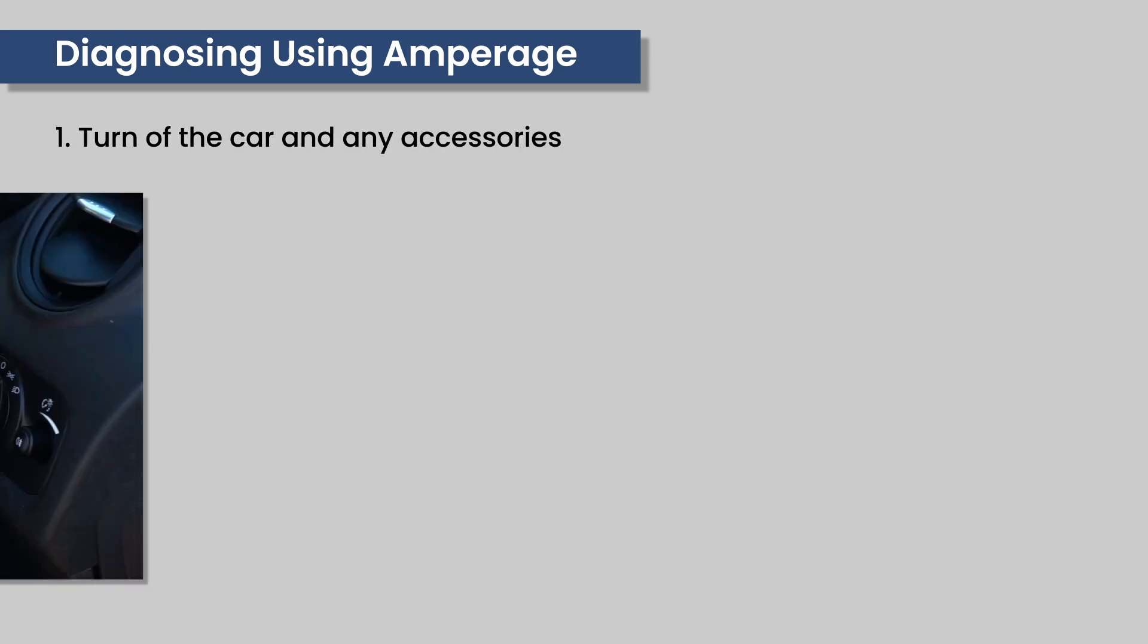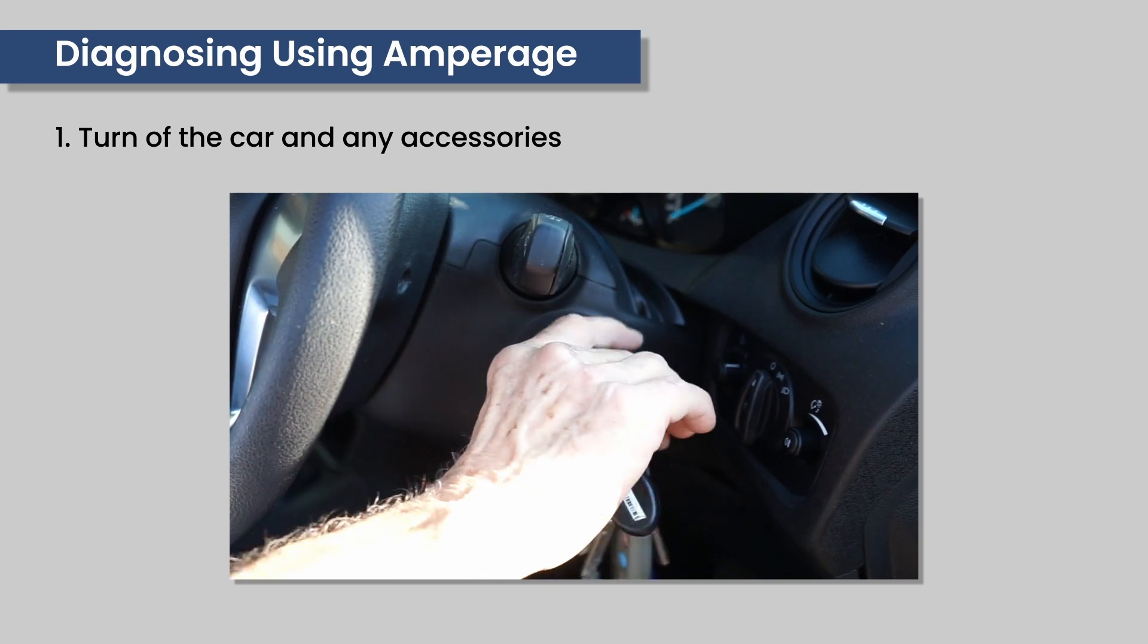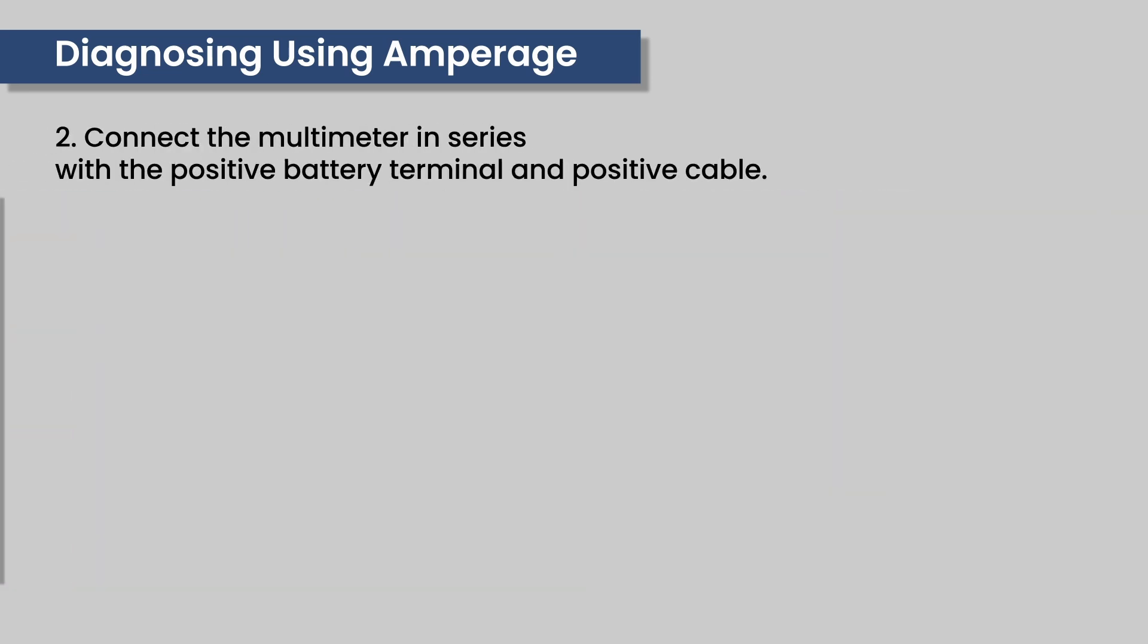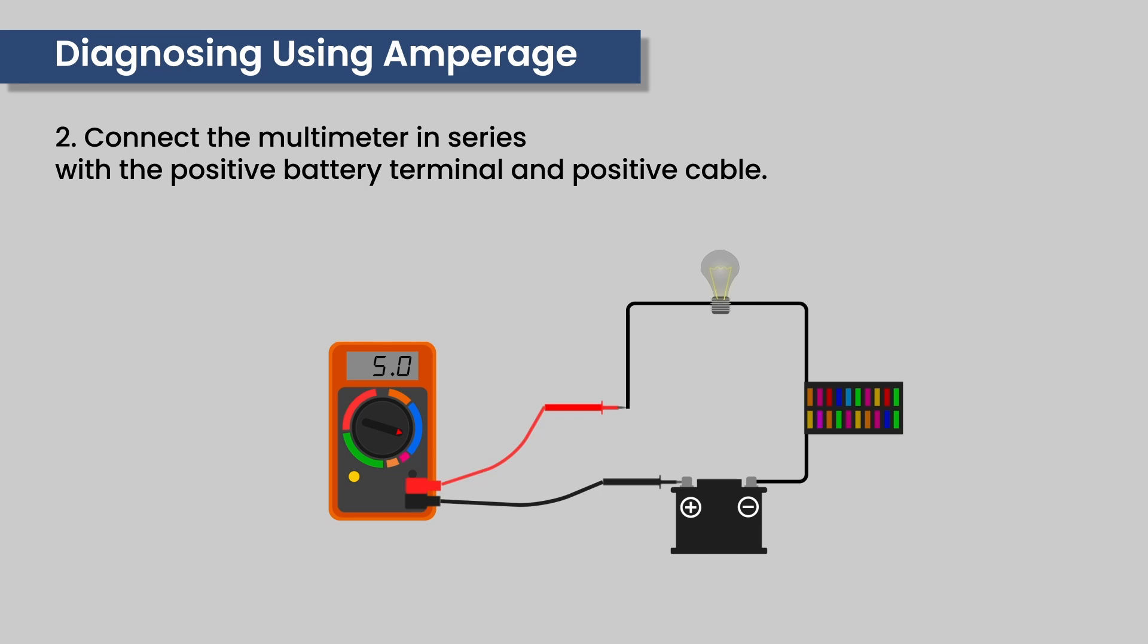Start by turning the car and any accessories off. The multimeter must be connected in series with the positive battery terminal and positive cable. If there is an unusually high drain, the source can be found by removing the fuses one by one. If the drain stops when removing a specific fuse, then the circuit connected to that fuse has the fault.